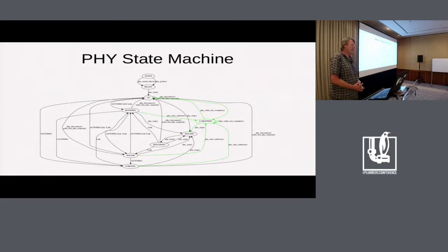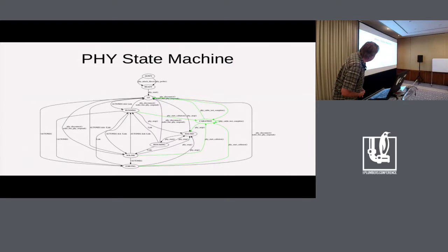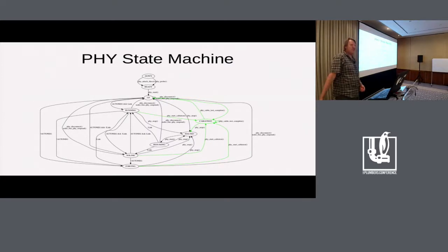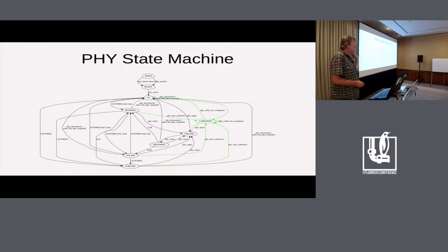The PHY has this quite complex state machine. We can add one more state to the state machine just to handle cable diagnostics. It slowly gets simpler and simpler as Heiner takes states away, so don't be surprised if it ends up as one state in the end.